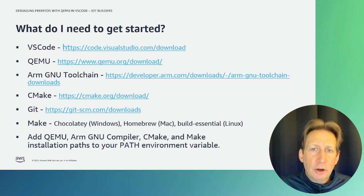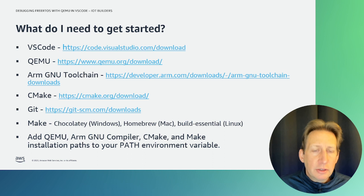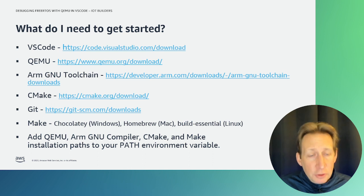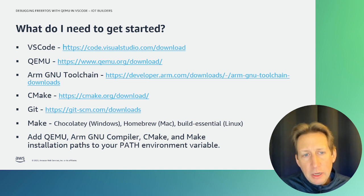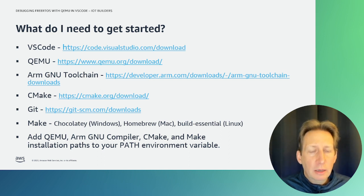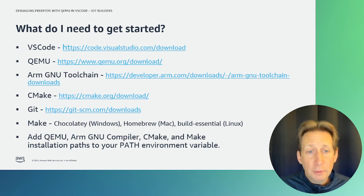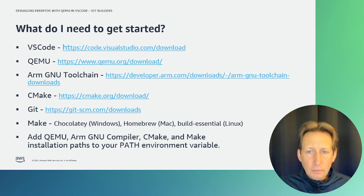So what do we need to get started for this example? First, you need VS Code, and I'll provide links in the description of the video below. Then you need QEMU, then the ARM GNU toolchain, then CMake, and Git. And finally, you also need Make. Make can be installed a number of ways depending on your host environment — with Chocolatey on Windows, Homebrew on Mac, or using the Build Essential package in Linux.